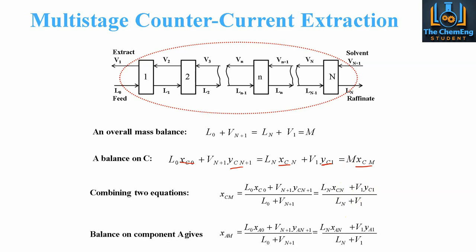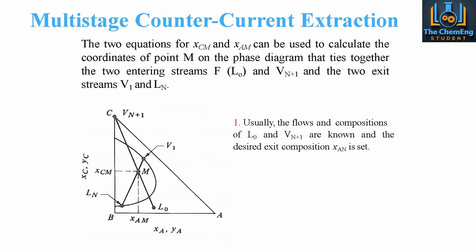We can perform the same balance on component A, with slightly different nomenclature, giving us our xcm and xam values. These equations for xcm and xam are used to find the coordinates of point M, which is critical on the phase diagram as it ties the two entering streams — L0 and Vn+1 — to the two exit streams — V1 and Ln. Usually the flow and compositions of the initial feed and solvent are known, and we set the desired exit composition xn. We typically assume pure solvent and have a desired specification for the system.